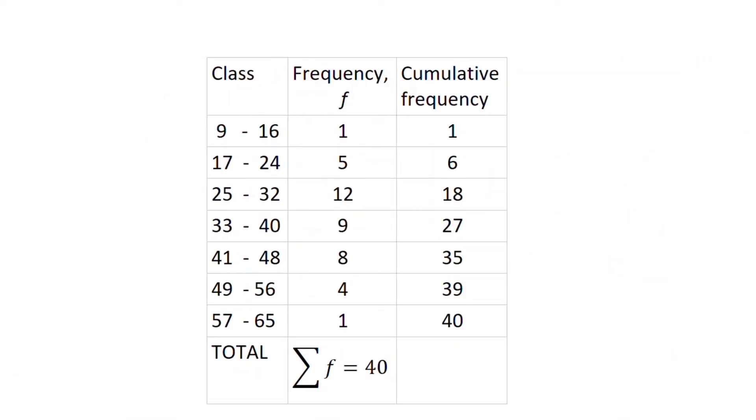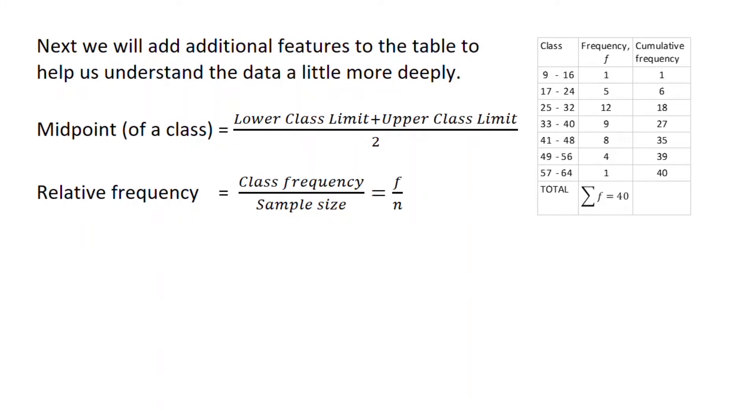So now we've created a frequency distribution table. And we even have added a cumulative frequency to the table. Now, how do we get from this point to creating the graph or the bar chart called a histogram? Next, we're going to add some features to the table that will help us understand the data a bit more deeply and also enable us to draw our histogram or graph.